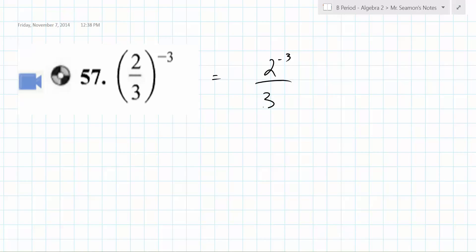So 2 to the negative 3, 3 to the negative 3. Yes, that's correct. So you could write it either way. 27 over 8. That's fine. Kind of a shortcut. Just here, if you want to see a short version of it.